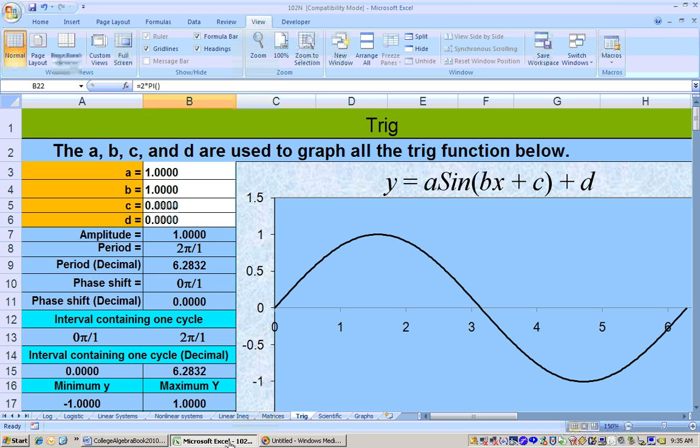The period is 2 pi and what we can do is graph sine functions and actually all the trig functions right here on this trig sheet. When you put in your a, b, c, and d, it's going to put in the values for the a, the number in front of the sine, the b, the number in the parentheses that's before the variable, and the c, the constant inside the parentheses, and the d, the constant at the end.